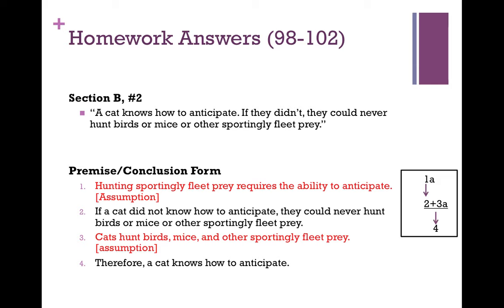But if that's all we said, we couldn't actually derive the conclusion listed at number four. Because what we'd be saying is that if a cat didn't know how to anticipate, they couldn't hunt birds, mice, or other sportingly fleet prey. Notice that premise two is a mere hypothetical, whereas the conclusion is a claim of actual fact. It would be like if I said: if you give me five dollars, then I'll be happy — therefore, I'm happy. You have to establish that you actually did give me five dollars to derive that conclusion. You can't derive a conclusion about actual fact from a mere hypothetical. So we need to establish that cats do in fact hunt birds, mice, and other sportingly fleet prey in order to establish the conclusion.